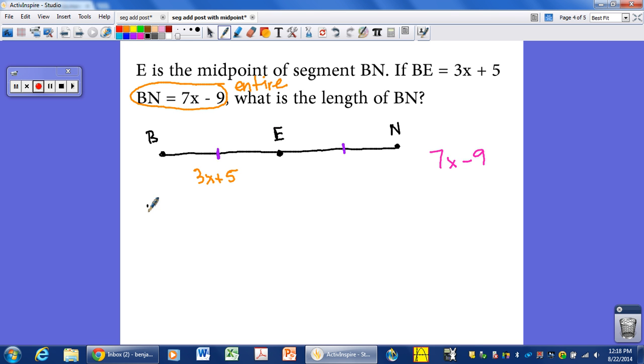So let's go back to the segment addition postulate. Because we know the entire length, we know that BE plus EN equals BN. And because E is the midpoint, we know that this segment will also be 3X plus 5. Because it's a midpoint, these two are equal. So this has the same equation or value as that does. So that's going to help us down here once we get to our equation. So our algebra, 3X plus 5, that's BE. EN is the same, another 3X plus 5. And that needs to equal 7X minus 9, the entire length.